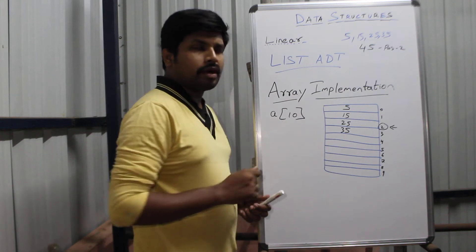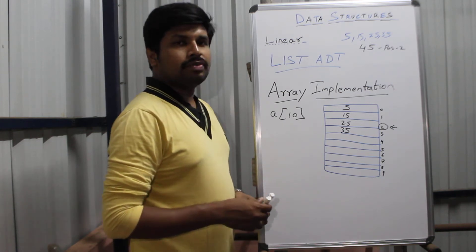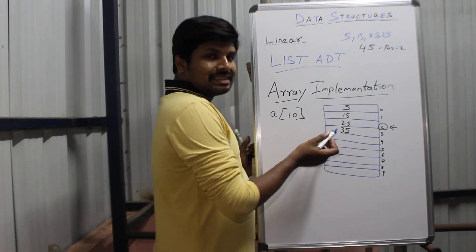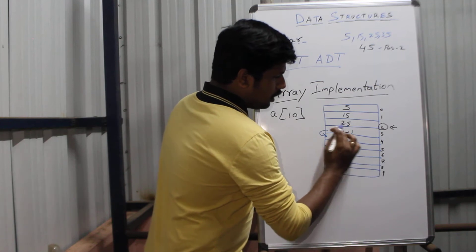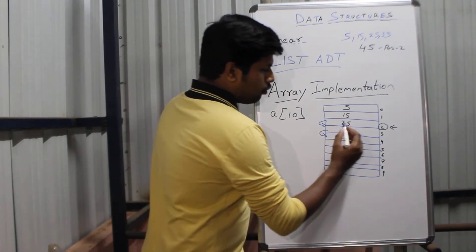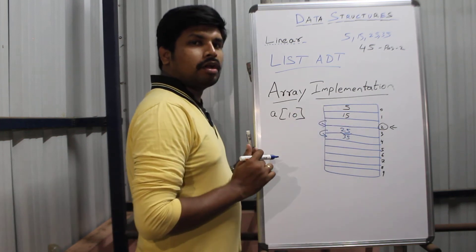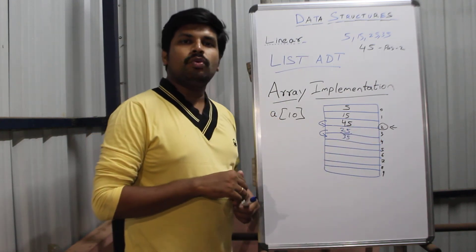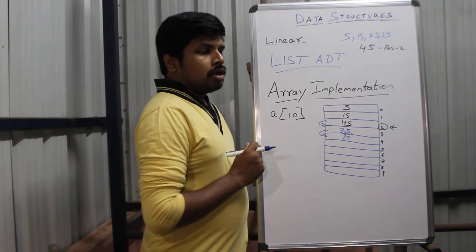To insert a new element, we have to free the memory. In order to insert the value 45, we are going to free the last cell and move elements forward — for example, 35 moves to the next cell, freeing cell 3, and then 25 moves to the next cell. Now we have a vacant position for our new value, and we can insert the value 45. This is how we insert a new value in array implementation of List ADT.